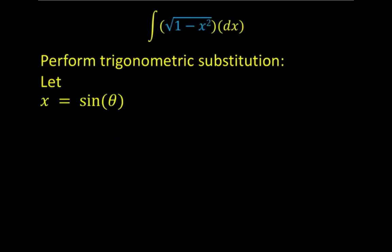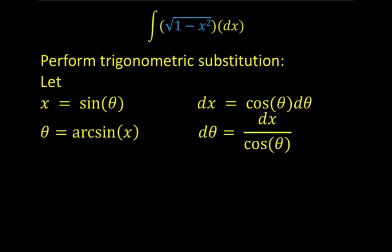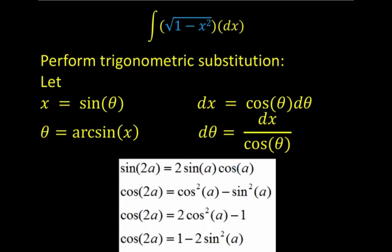First, we let x equal sine of theta, and dx equal cosine theta d theta. From x equals sine theta, it follows that theta equals sine inverse of x, or theta equals arc sine of x. Solving for d theta, we have d theta equals dx over cosine of theta. Aside from these substitutions, we need to recall the following double angle identities. These are the prerequisite knowledge we need to find the integral of the given function.